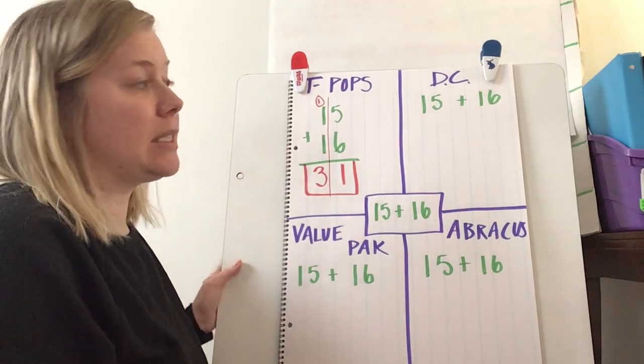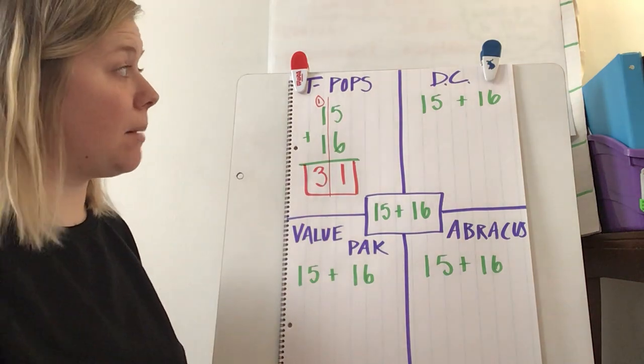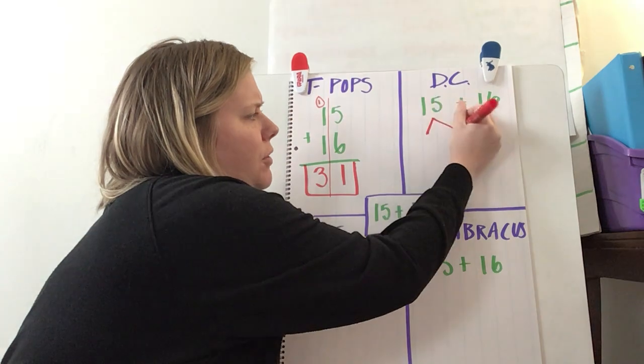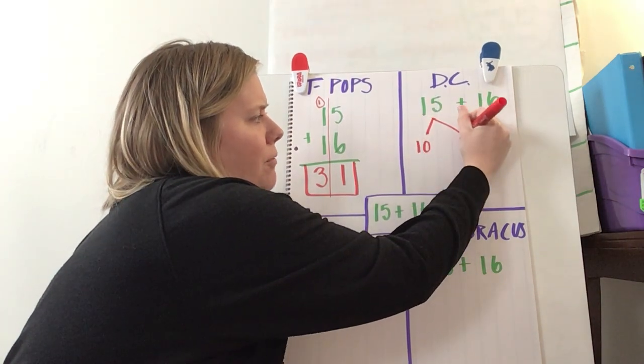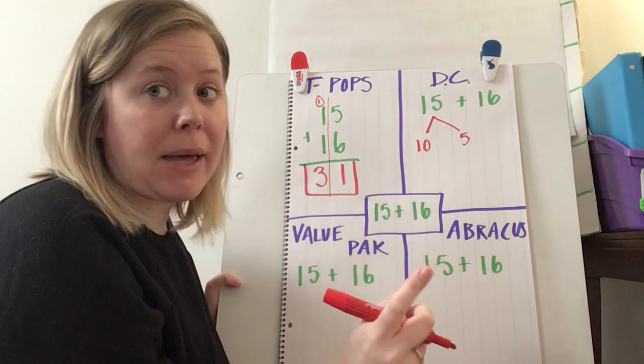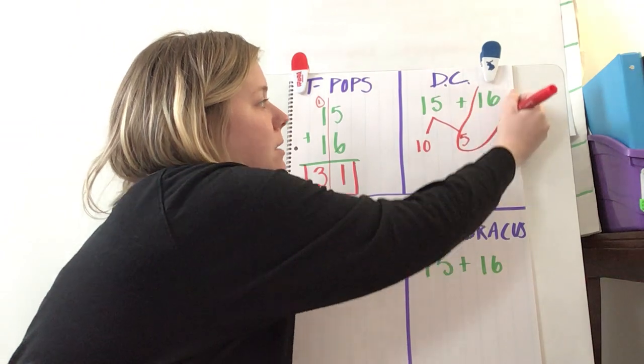So DC, I'm going to decompose one of these numbers to get to a friendly number. I'm going to decompose 15 into 10 and 5. So my friendly number is 10, very easy to add to. Remember, many different ways to decompose.